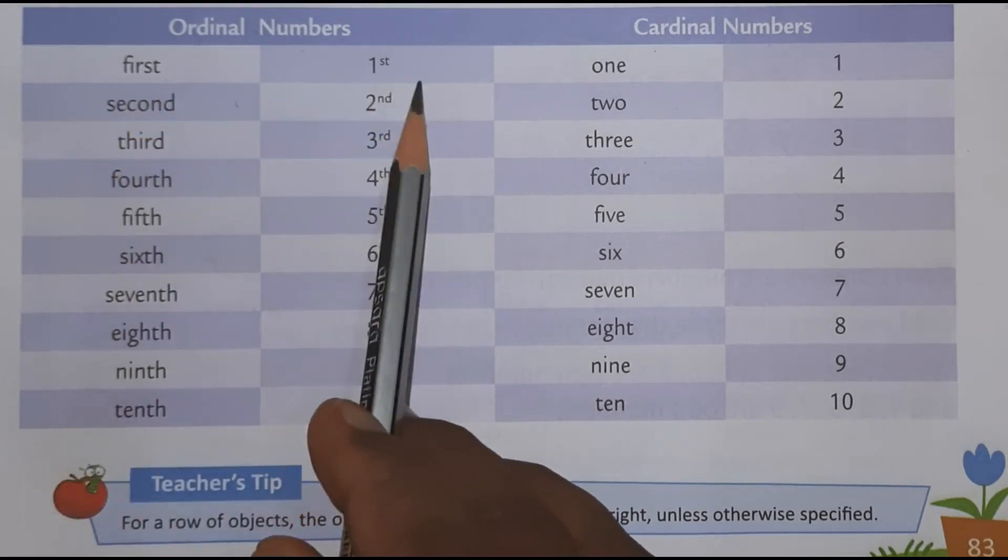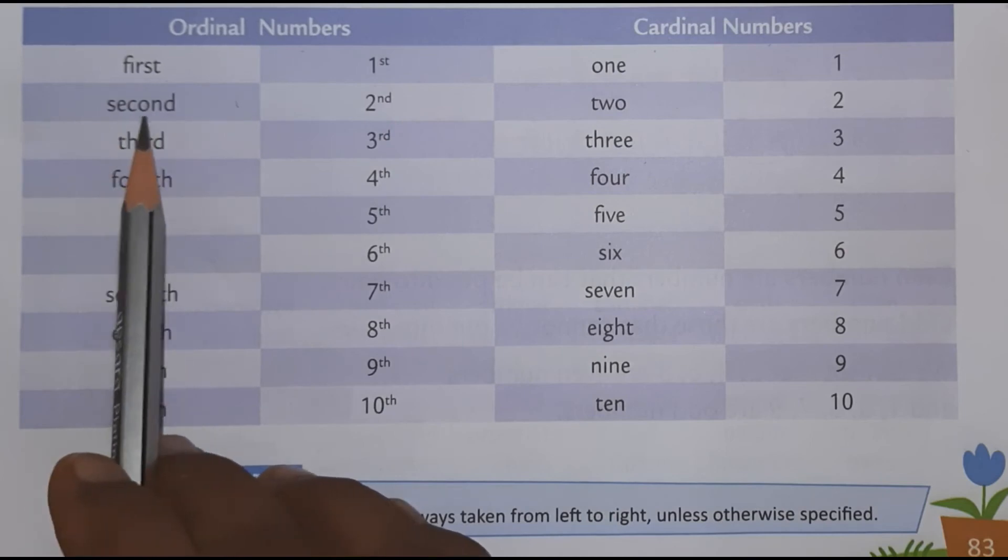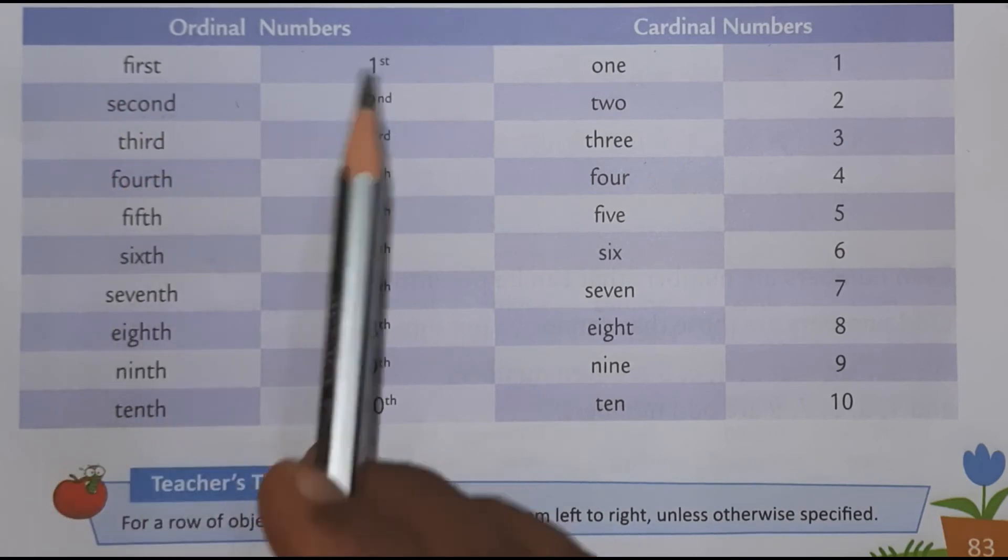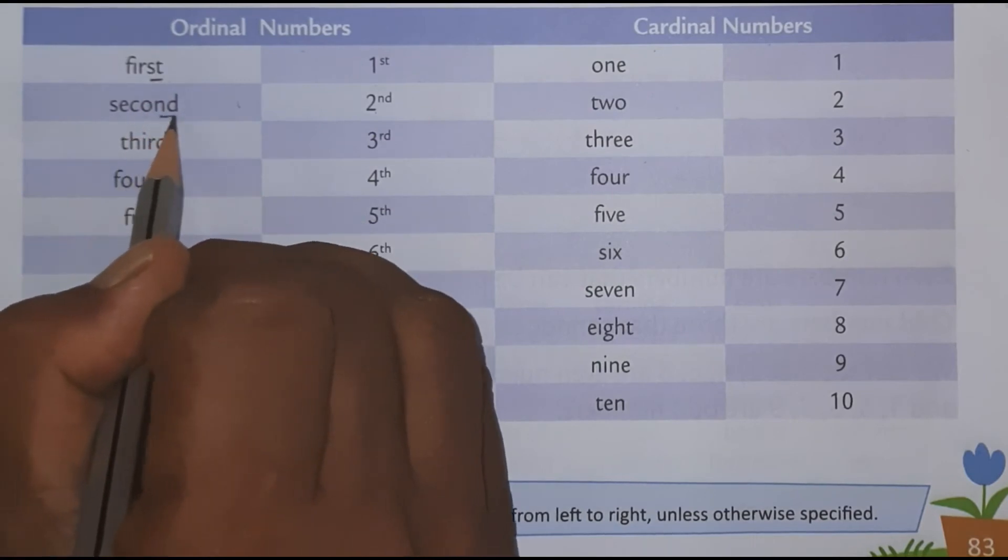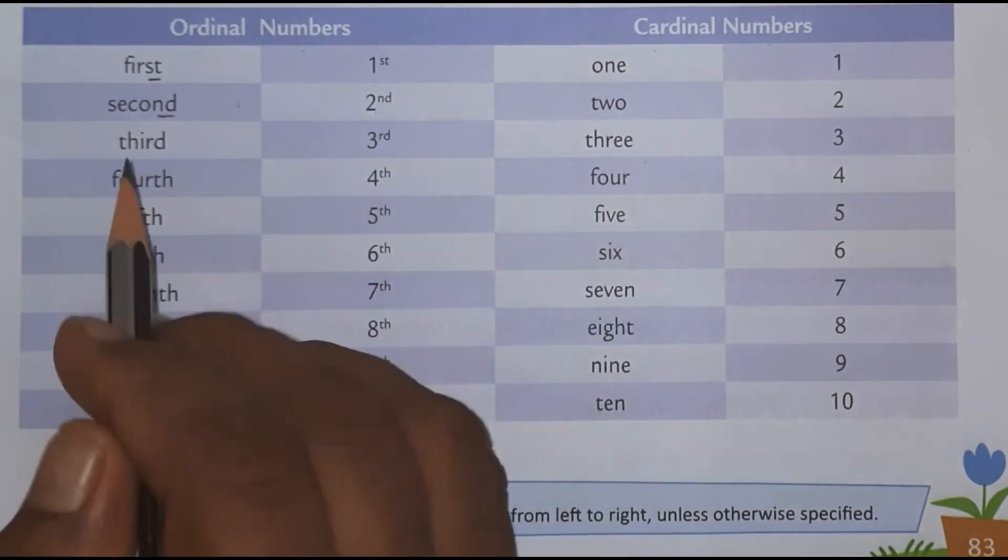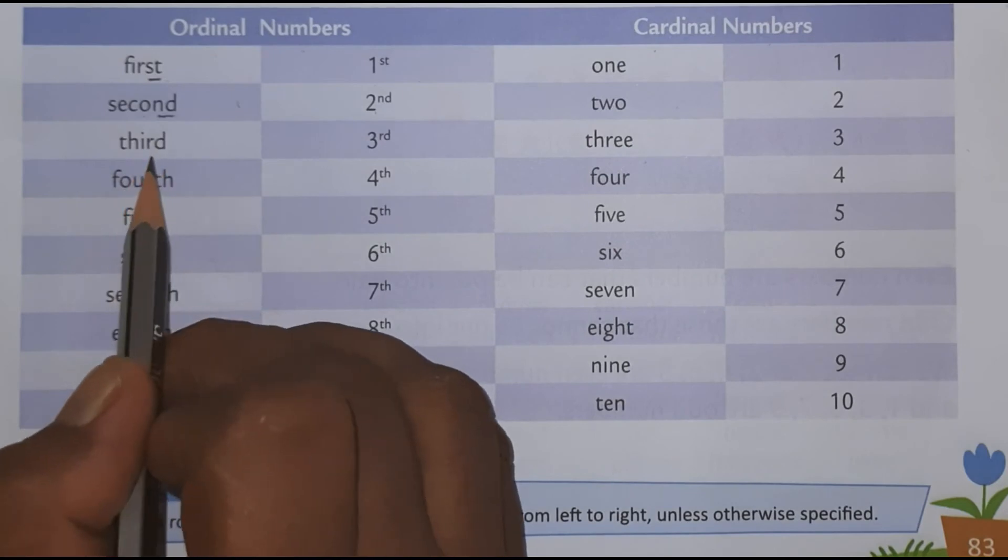F-I-R-S-T, first. S-E-C-O-N-D, second. Last two alphabets we have to write here. Third, T-H-I-R-D, third.